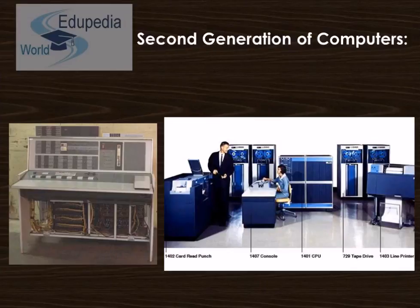As you can see from the pictorial representation, things are a bit simpler now as the vacuum tubes are replaced by transistors. You can also see different input/output devices such as card readers, tape drives, the central processing unit, the console of that time, and the line printer.